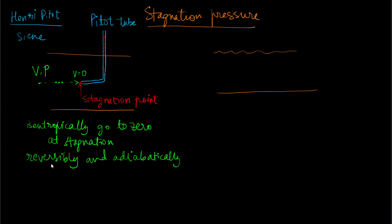When equilibrium is attained, the liquid in the Pitot tube is stationary. The change in level of fluid in the Pitot tube allows us to find the velocity at that point. Writing the Bernoulli equation between point one (in the flow) and point two (the stagnation point): p1 plus half rho v1 squared equals p2, because the velocity at point two is zero.